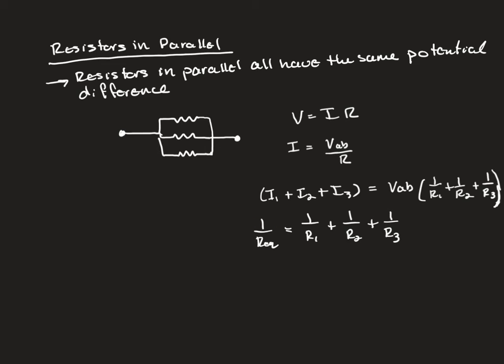But I factored out the potential, because the potential is going to be the same for each one. So we're going to get that 1 over the equivalent resistance is equal to 1 over R1, plus 1 over R2, plus 1 over R3, and so on.